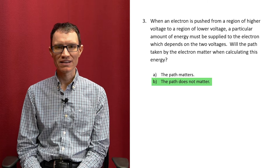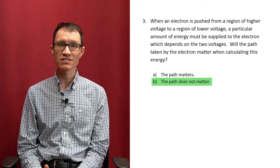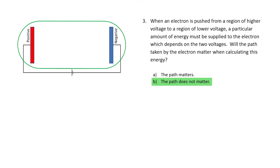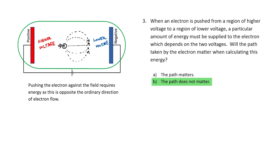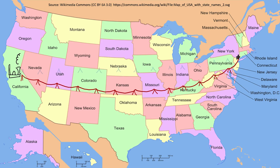The correct answer is B — the path does not matter. The Coulomb force is an example of a conservative force, and pushing an electron through a 1 volt potential difference will not be path dependent. If you have a power plant in California and it's necessary to deliver electricity to New York City, it shouldn't matter whether the power line runs through Kansas or whether it runs through Nebraska.